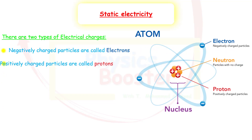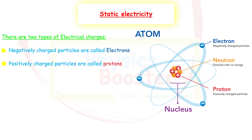There are two types of electrical charges. Electrons are negatively charged, and protons are positively charged. But what about neutrons? Neutrons are uncharged particles.